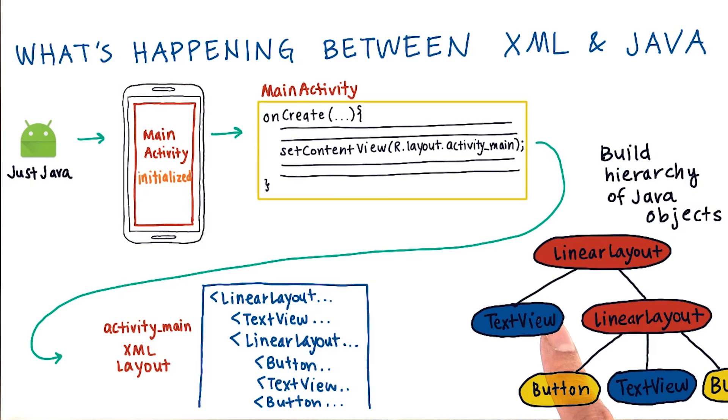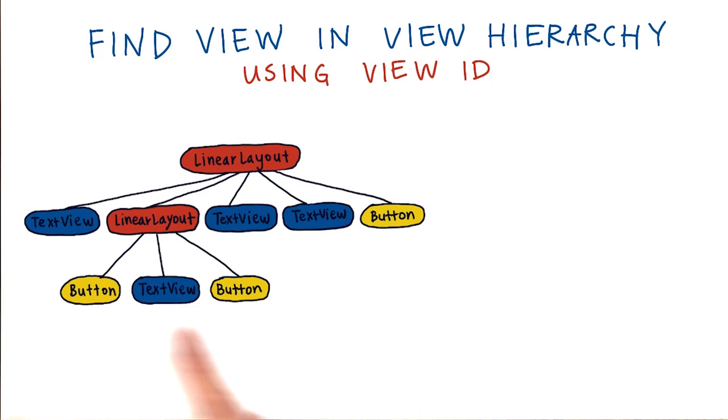Notice that we didn't have to write code for new text view or new linear layout and to set the font size. All of it was handled by the inflation process of the activity. To interact with these views while the app is running and to change them, for example, to change the text or to change the buttons, then we need to find these Java objects.